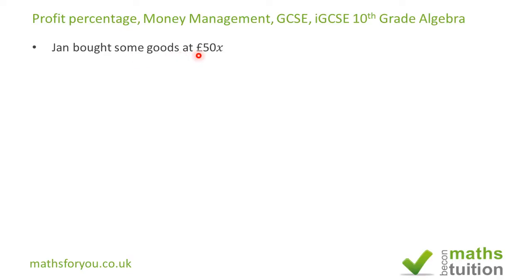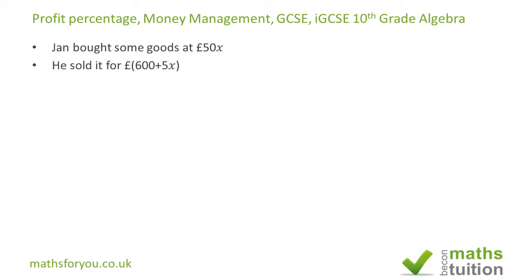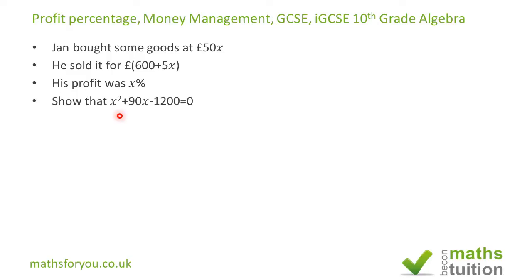Jan bought some goods at 50X pounds and sold them for 600 plus 5X pounds. His profit percentage is X percent. We need to show that X squared plus 90X minus 1200 is equal to zero.